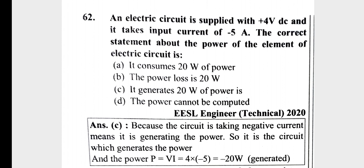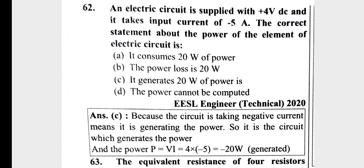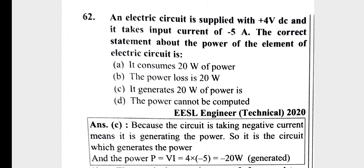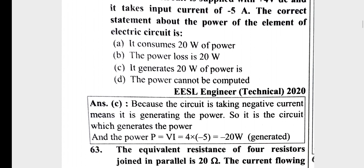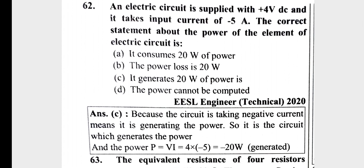Question 2: An electrical circuit is applied with plus 4V DC and it takes an input current of minus 5A. The correct statement about the power of the element: Power equals V into I, that is 4 into minus 5, which equals minus 20W. The circuit takes negative current, meaning it is generating power — it generates minus 20W.